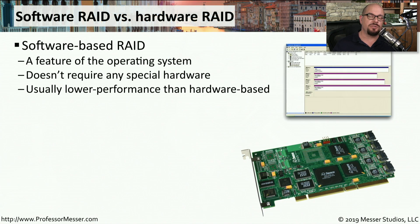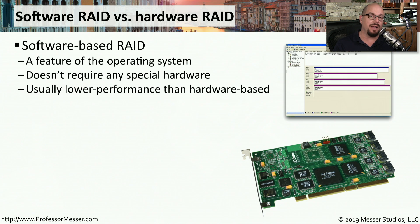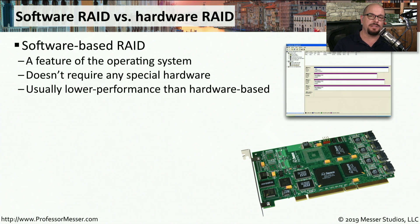There are two major types of RAID configurations you might run into. One is software-based RAID, which may already be built into the operating system you're using. You can put multiple hard drives into your computer and tell the operating system that you'd like to use these drives as a RAID array. You don't need any special hardware or special controllers — the operating system takes care of all of the RAID configurations.